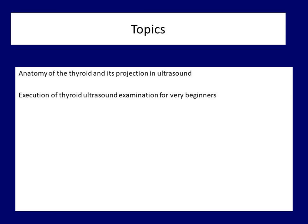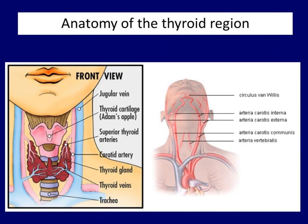But before discussing the execution, we have to speak about the anatomy of the thyroid and the projection of the anatomical structures on ultrasound. The thyroid is located under the thyroid cartilage between the trachea and the carotid artery. The two lobes surround the trachea ventrally and are joined with the isthmus between the lower parts of the lobes. Thyroid parenchyma is occasionally found between the upper level of the lobes — this is called the lobus pyramidale.